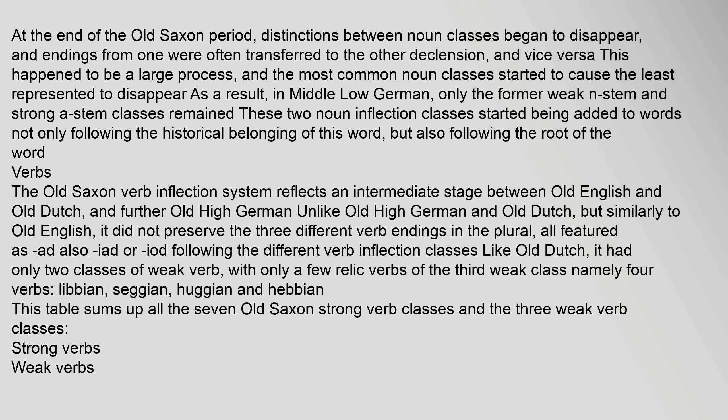The Old Saxon verb inflection system reflects an intermediate stage between Old English and Old Dutch, and further Old High German. Unlike Old High German and Old Dutch, but similarly to Old English, it did not preserve the three different verb endings in the plural. Like Old Dutch, it had only two classes of weak verb, with only a few relic verbs of the third weak class, namely four verbs: libion, seggian, hugian, and hebbjan.